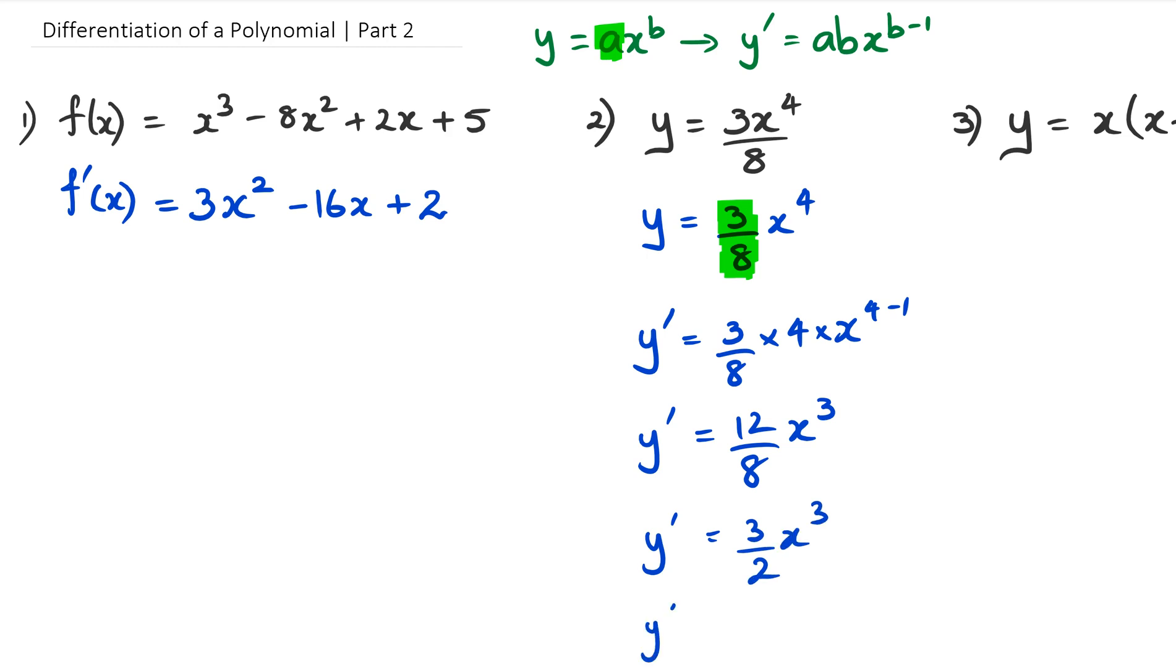Now, 12 over 8 can be simplified, and we're going to simplify it to be 3 over 2 x to the power of 3. Some of you might decide, actually, I want to leave this as 1.5. You could leave it as 3 over 2, you could leave it as 1.5, it really doesn't matter. That's question number 2.